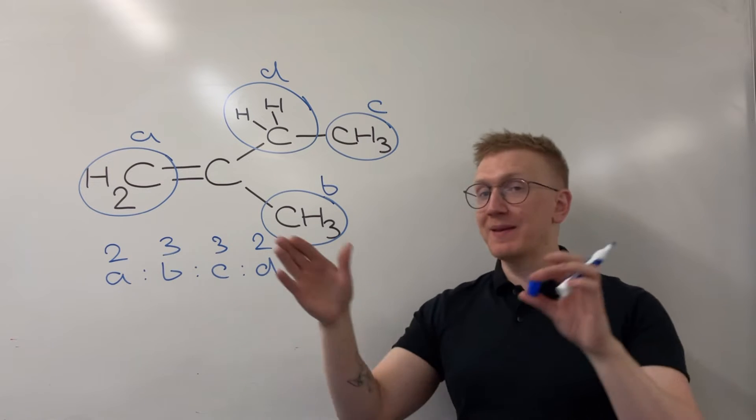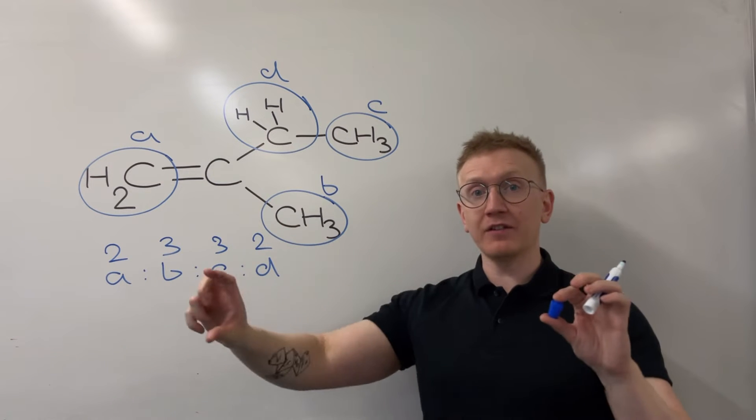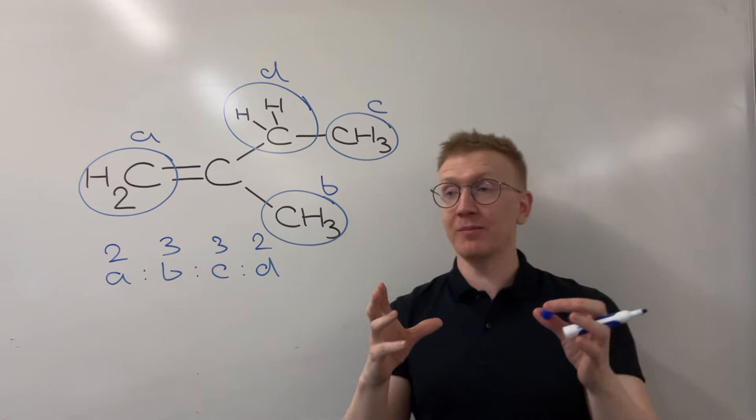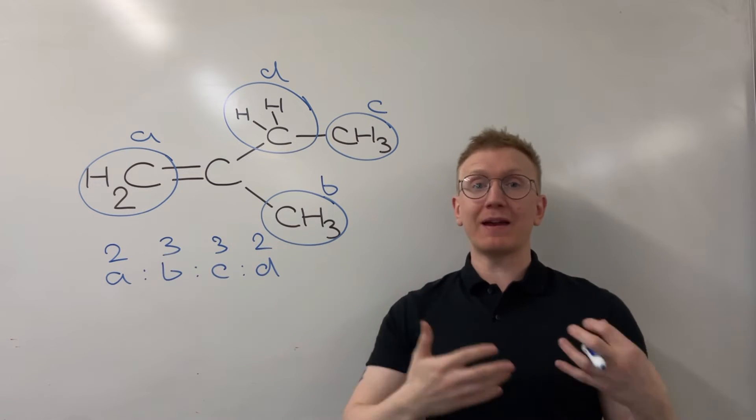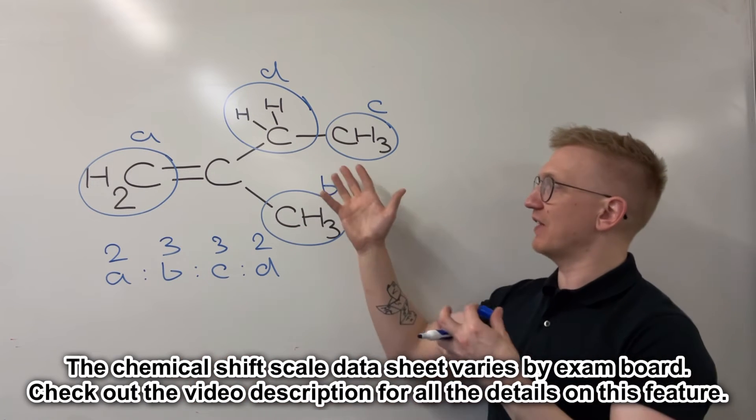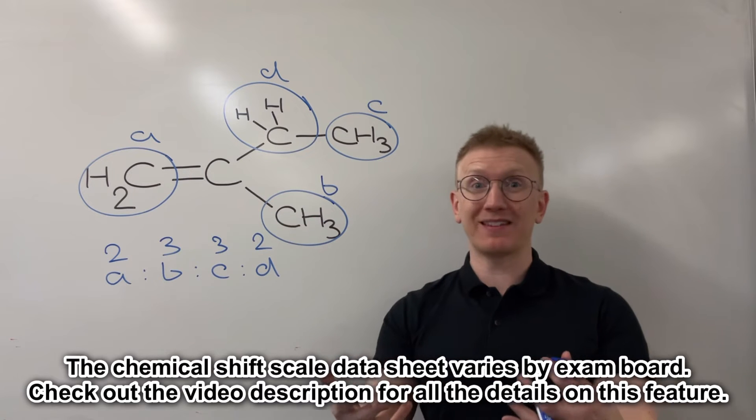I don't know if they'll be in exactly that order on the chemical shift scale. So that's on the x-axis when we're looking at the hydrogen NMR spectrum. But I can say that there will be this ratio of those peaks. But I'm not looking at the chemical shift scale in this tutorial. I just want to identify the environments, the ratio, and then the splitting pattern.